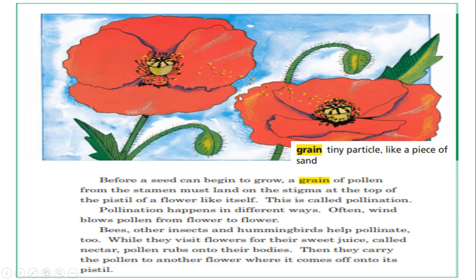Over here we are seeing two beautiful red flowers. Some of it is still closed because it is ungrown yet. Once it grows it will open like these. Over here we have the stems, green leaves, some thorns. Remember kids, the middle part of the flower is called stigma. It is the sticky part that has the pollen.